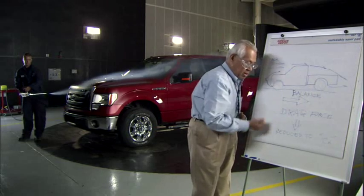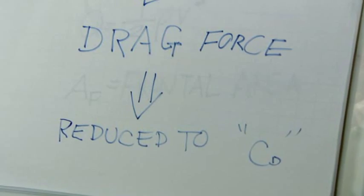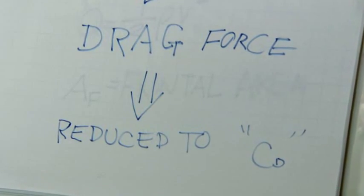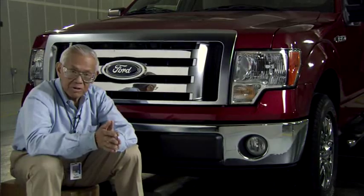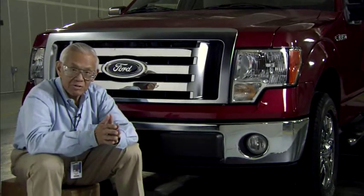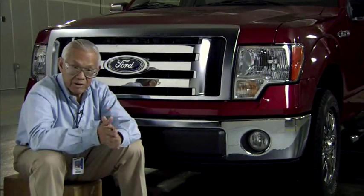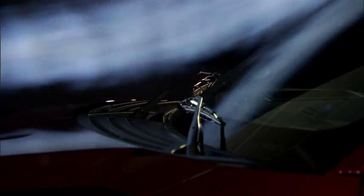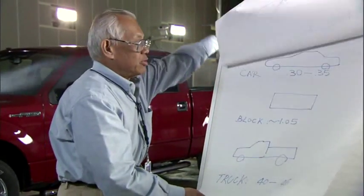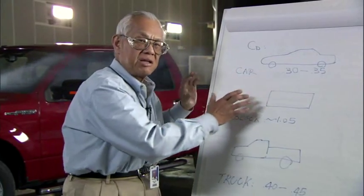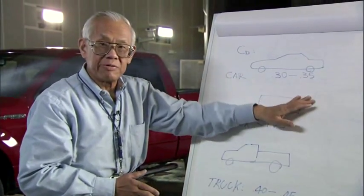We measure this drag force and then reduce it to a term called CD, or drag coefficient. Drag coefficient is a non-dimensional number that relates to the efficiency of the shape — whether the vehicle is efficient or not. In a typical vehicle these days, on a passenger car, you see a typical CD of 0.3 to 0.35.